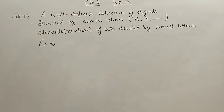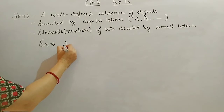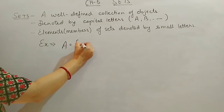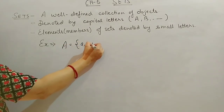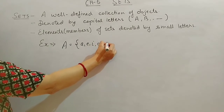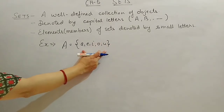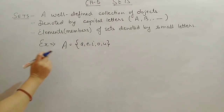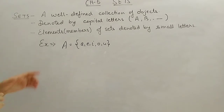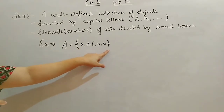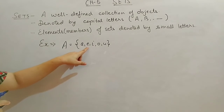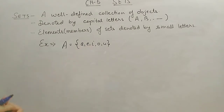Elements — meaning what are the members inside the set — we will denote by small letters. For example, suppose if we have a set A = {A, E, I, O, U}. This is a set of vowels of the English alphabet. Always, a set we have to write within flower brackets separated by commas.